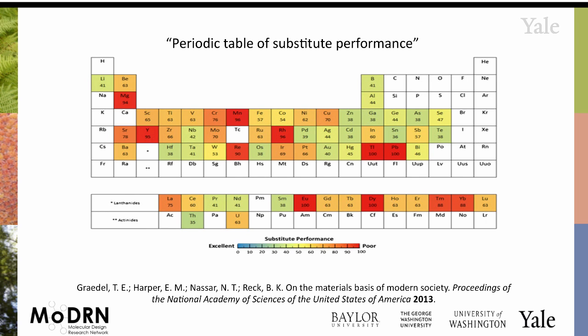What that means is: if you're tasked with coming up with a new catalyst, you might say you have a great manganese catalyst to do biomass conversion and make a useful chemical building block from a renewable resource. But if manganese is currently being used in some other application that can't be substituted, then you have to think about whether you're pulling it away from something critical. You could also use this as a flip side — asking why rhodium is so poor in terms of available substitutes, and that might be a good area to focus research attention.